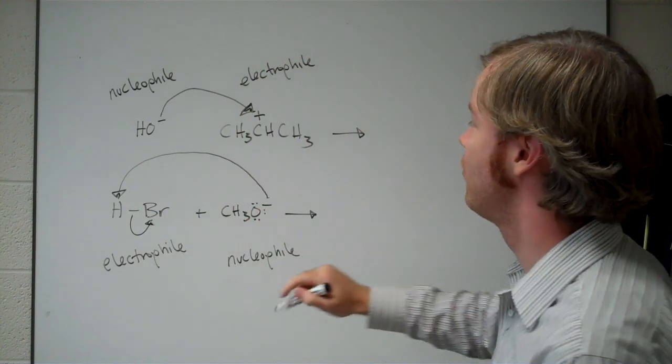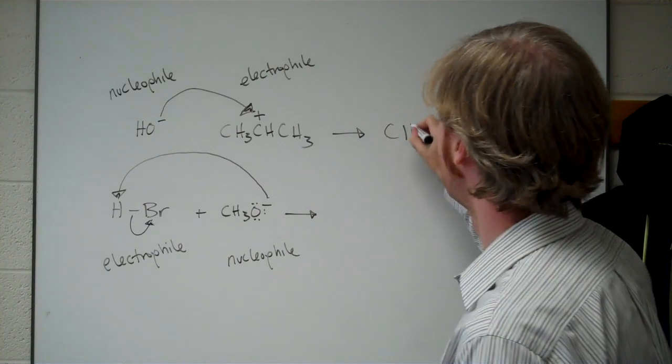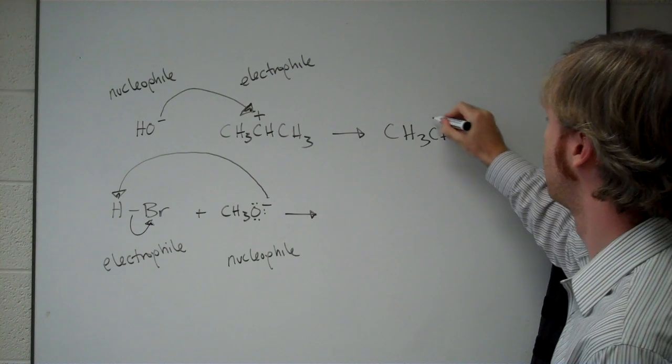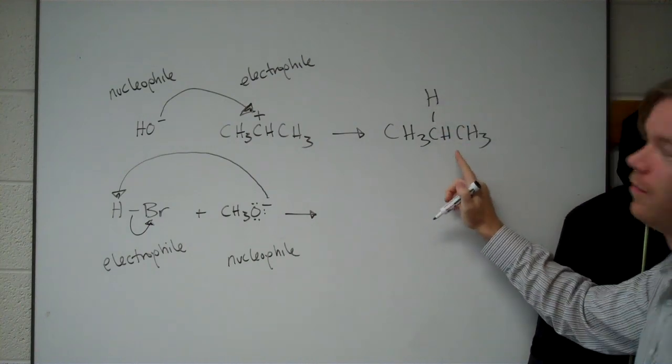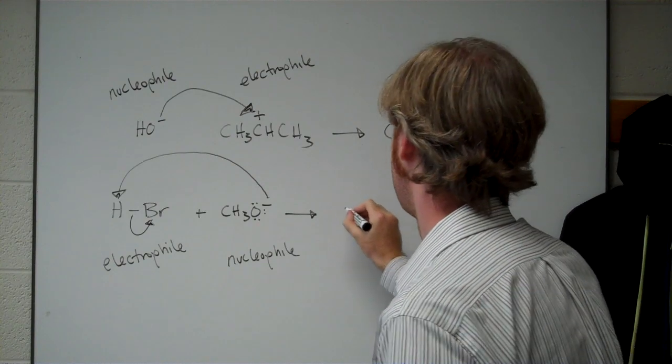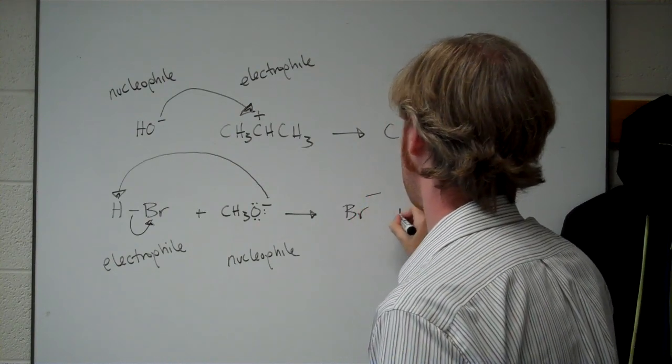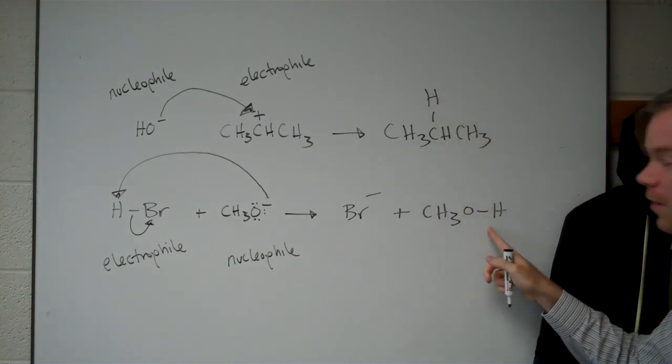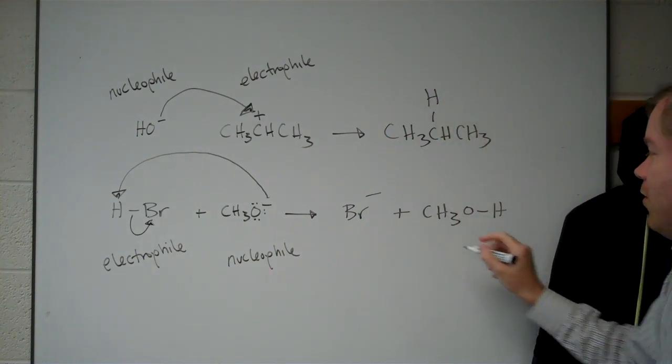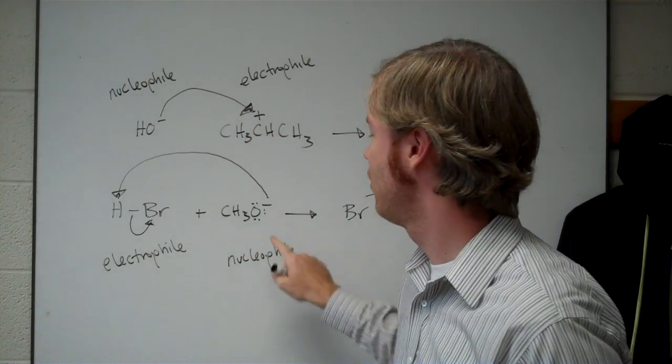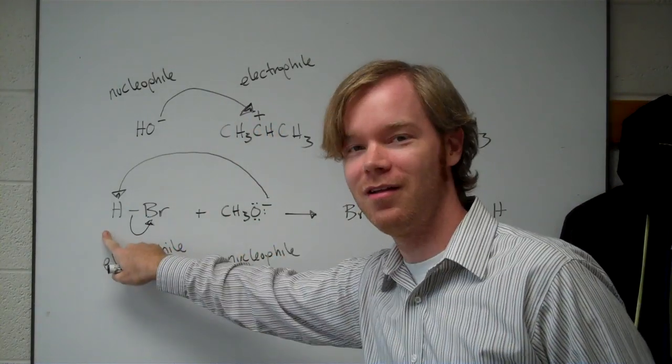All right, so the products of these reactions are going to be added a new bond, new hydrogen to this system, and a new bond and a new hydrogen here. So remember, curved arrows start at the nucleophile, end at the electrophile.